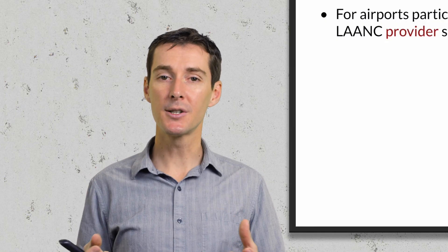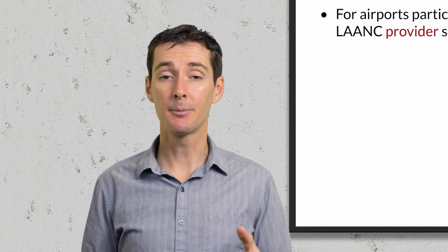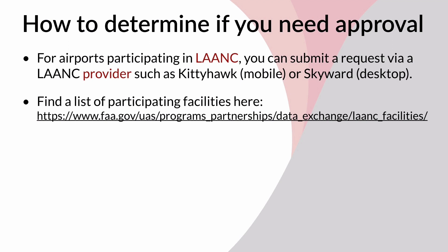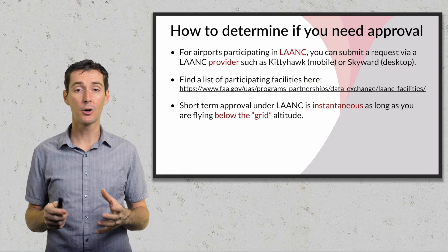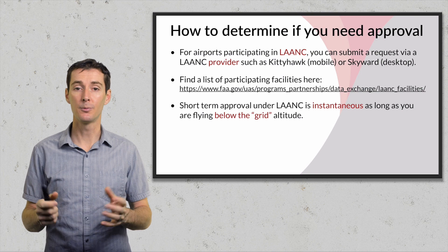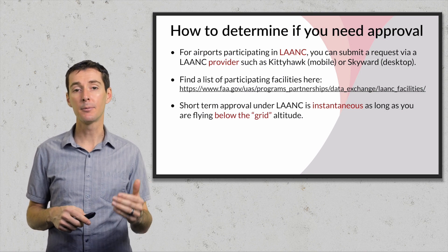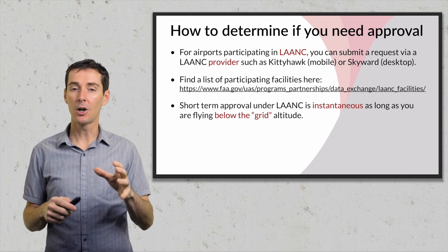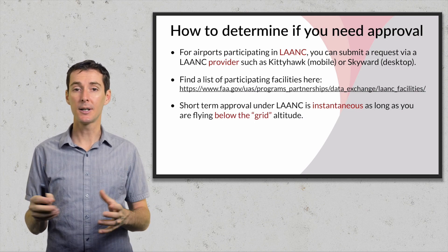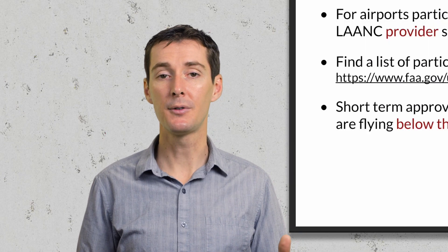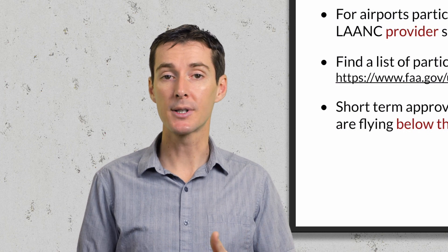Personally, I like Skyward because I can do all my planning ahead of time on the computer, which is much easier than using a cell phone or tablet. I can get my approval immediately and even print it to have with me in the field. If you want to find a list of airports participating in LAANC, you can go to the facility map or to a link that shows the full list of airports. If you want to fly in Class D airspace tomorrow for a real estate job, for example, you can just go into LAANC and get instant approval, as long as you're flying below the grid altitude. Each grid on the facility map shows numbers — 400 feet, 250 feet, 300 feet, sometimes zero — meaning you can't fly in that area at all.